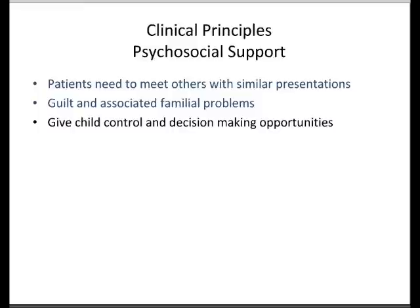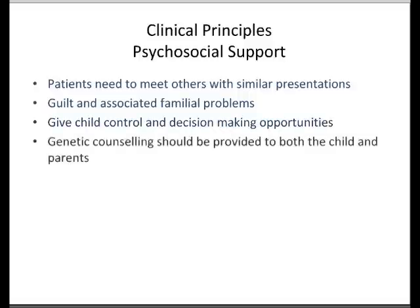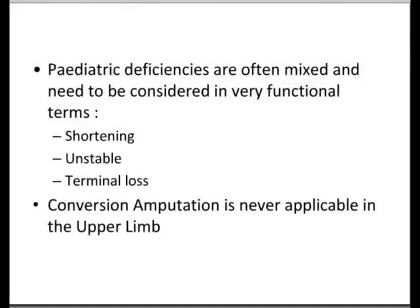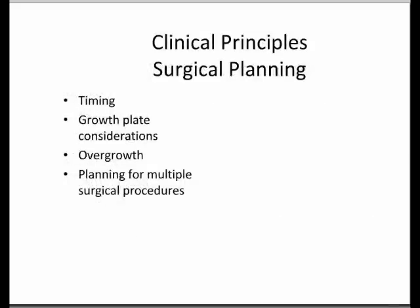As the child gets older, give them some control. These general deficiencies are often mixed and need to be considered in very functional terms — in terms of shortening and instability. In terms of surgical planning, timing is very important, aligned with the child's development. It's very important to consider growth plates when planning operations. Stump overgrowth is also very common and can be a problem. When you embark on surgery, you've got to leave the door open, because you may need to do further procedures.